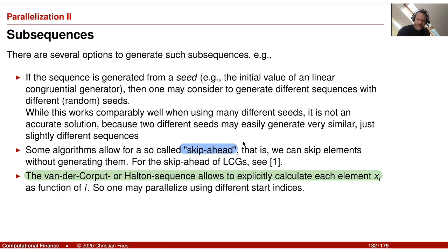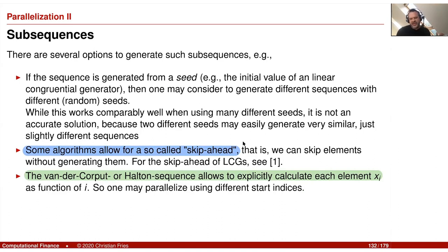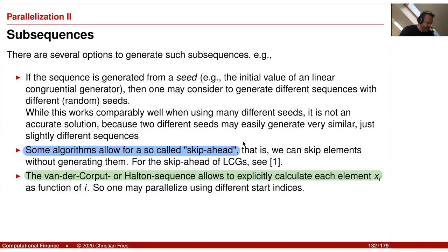If you are in the special situation that your sequence calculates element x_i explicitly from the index — like the van der Corput or Halton sequence — then you can very easily parallelize by just saying start at a certain index. If this is not possible, sometimes random number generators have some kind of skip-ahead possibility, so you can find a formula that generates element 100 directly from element 0, making a larger step.